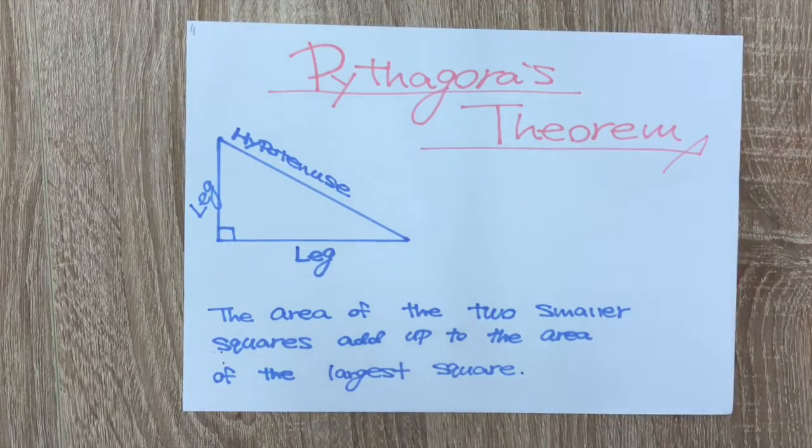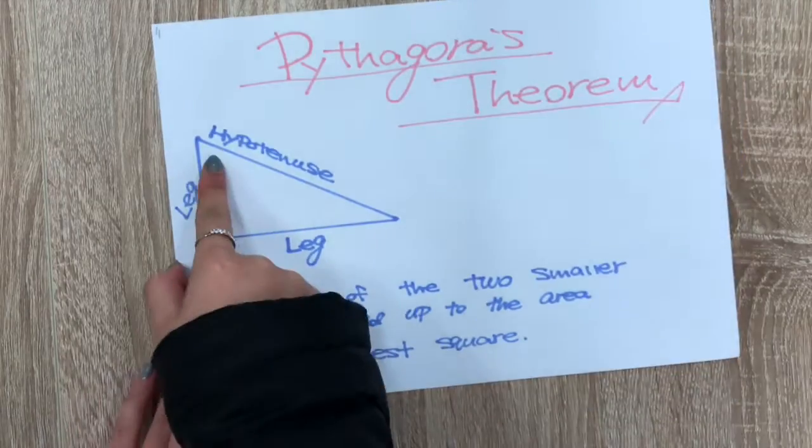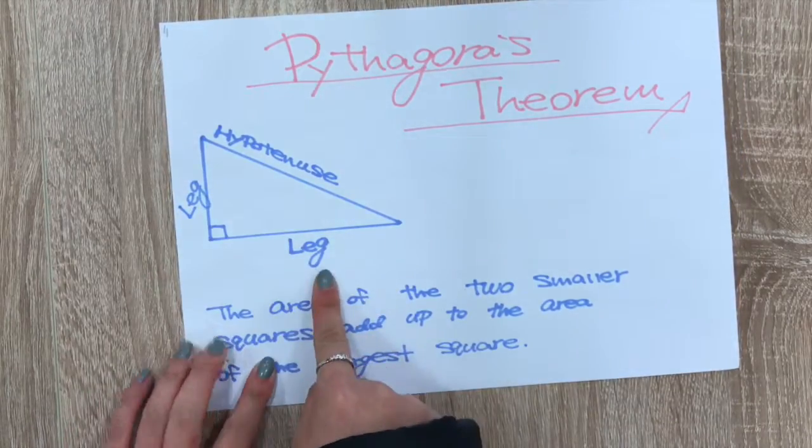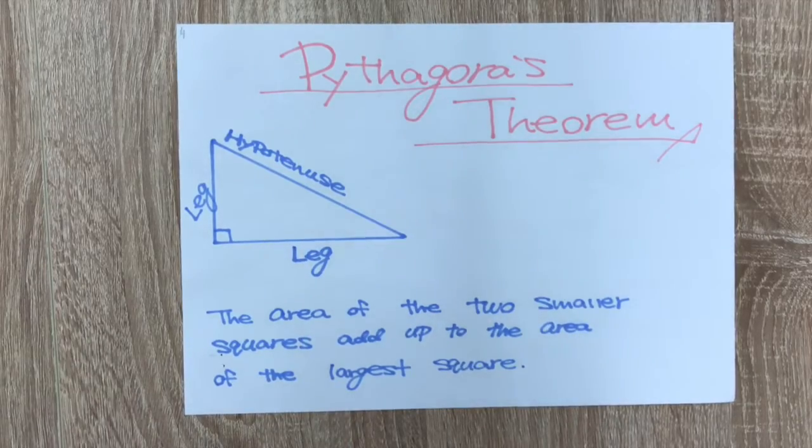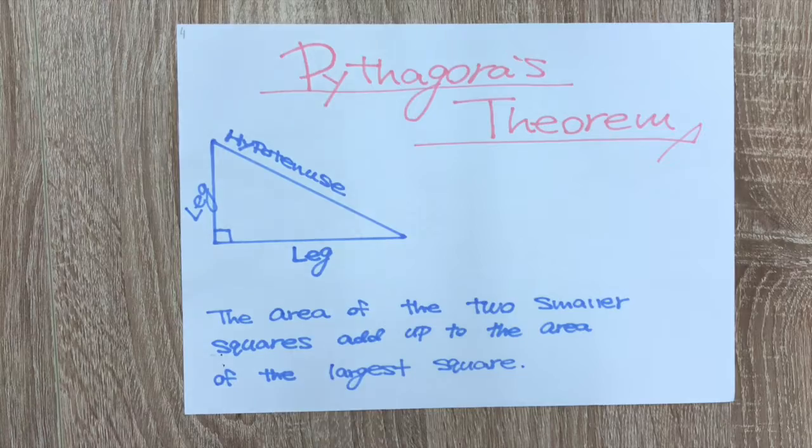This is another example. This is hypotenuse and these are legs. The area of the two smaller squares add up to the area of the longest square.